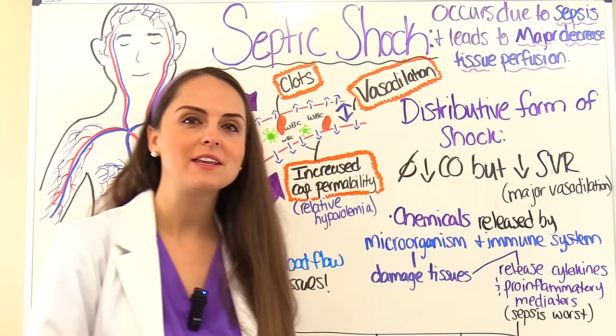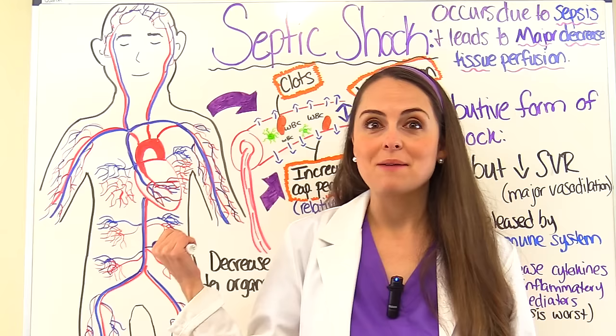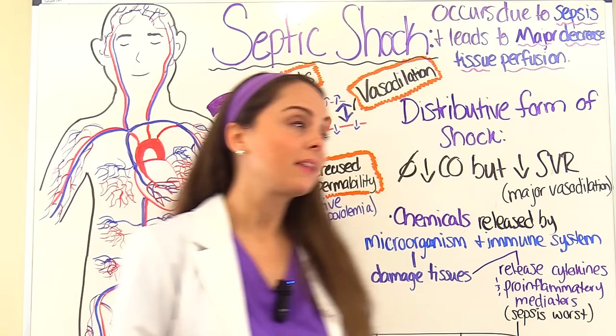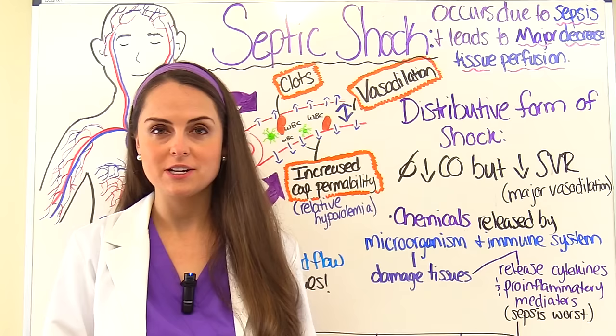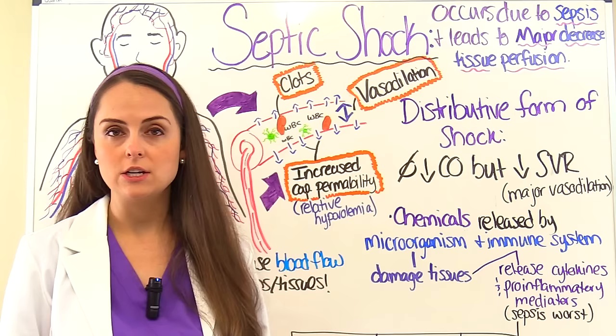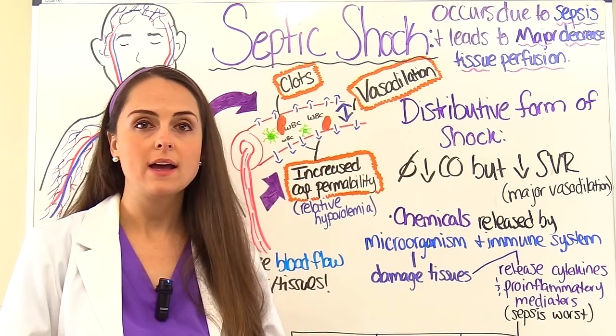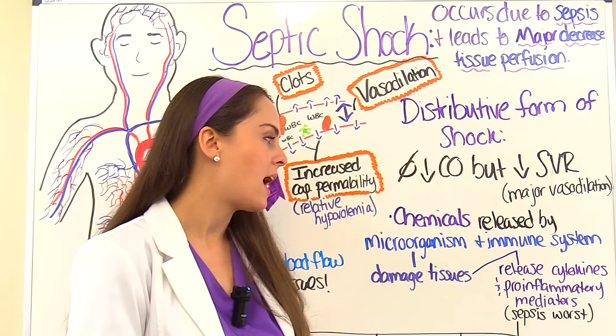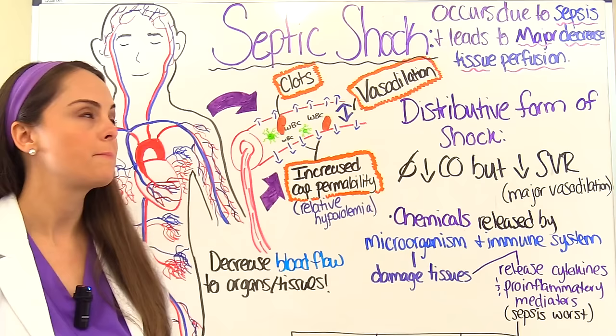We have this microorganism that has invaded our body, and the immune system in sepsis responds in an exaggerated way — it thinks it's going to take care of it but actually makes things worse for the patient, progressing them to septic shock. The microorganism releases toxins that damage surrounding tissues, and the immune system sees this and responds in an amplified way, releasing cytokines and pro-inflammatory mediators.